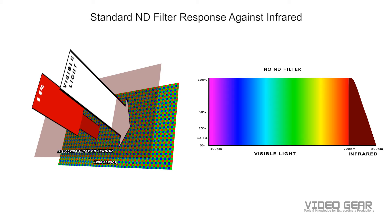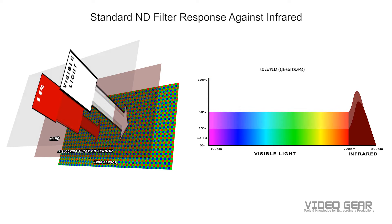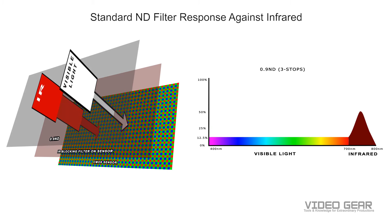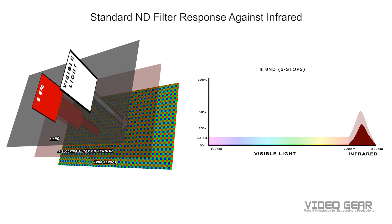If we look at how a standard ND filter works, we'll see that the visible light is decreased with each filter strength — from one stop, to two stops, to three stops, all the way down to six stops. Because infrared light isn't decreased very much by standard ND filters, the camera's infrared blocking filter can be overpowered, leading to what is called IR pollution.